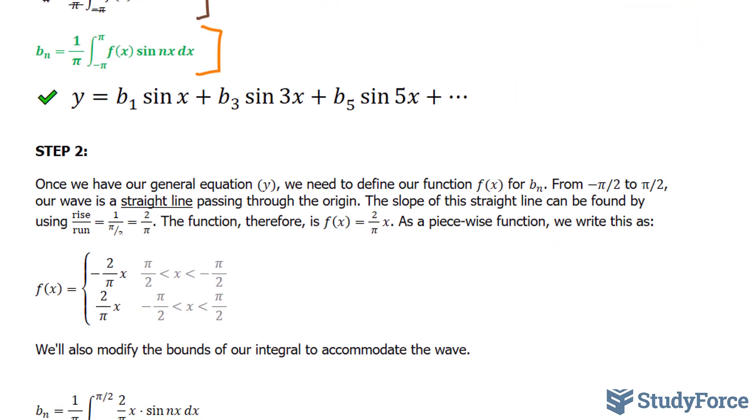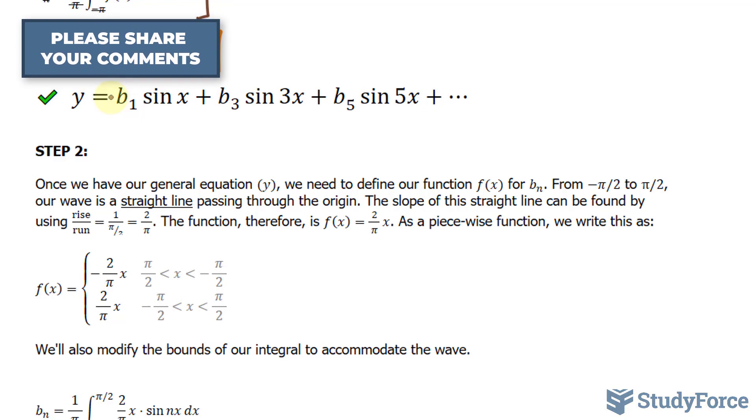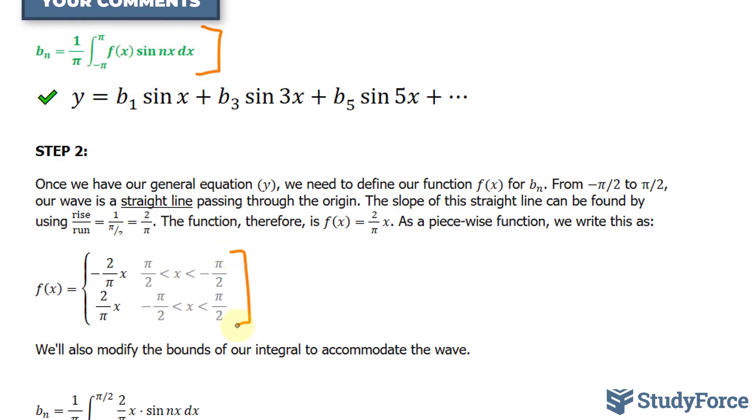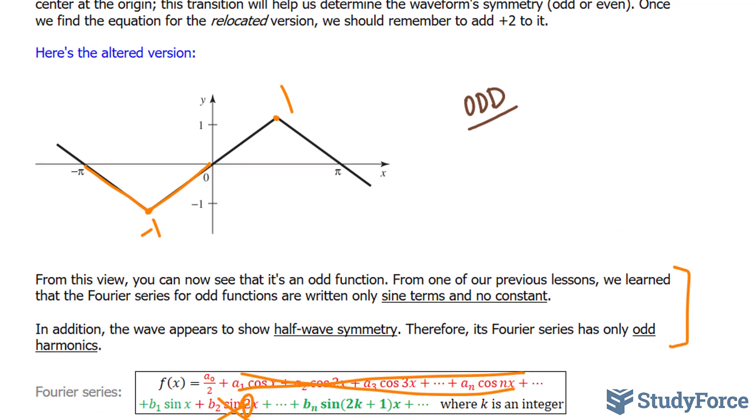In step number 2, once we have our general equation y, we need to define our function f(x) for b_n. We don't know what f(x) is. However, we can come up with it by creating a piecewise function. As you can tell from your wave, from -π/2 to +π/2, it's a straight line. And we can find the slope of this straight line passing through the origin by using rise over run. If I rise upwards two units and run from -π/2 to +π/2, I'll end up with a slope that's 2/π.